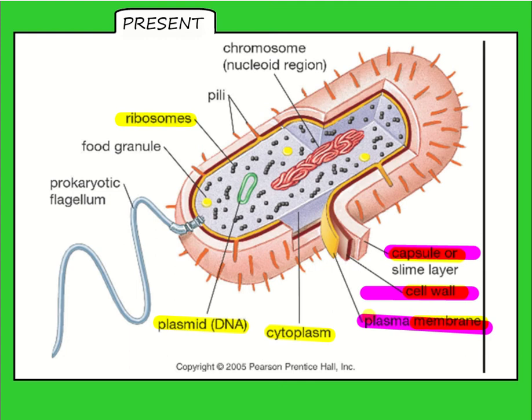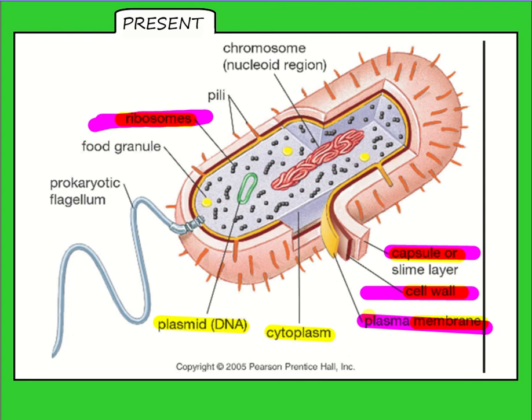Prokaryotic cells also have ribosomes. Because all living things rely on enzymes and enzymes are proteins, they need ribosomes to make proteins. The ribosomes are shown as little black dots all over the cell — they tend to aggregate around where a nucleus would be, except this cell doesn't have a nucleus.